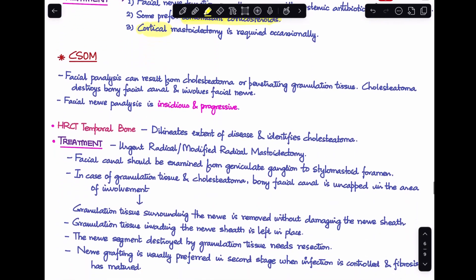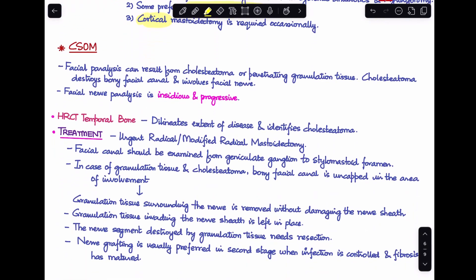In chronic otitis media, facial paralysis results not from a dehiscent canal but from cholesteatoma or penetrating granulation tissue that destroys the bony facial canal and progressively involves the facial nerve. The onset is insidious and slowly progressive. HRCT of the temporal bone helps delineate the extent of disease and identify cholesteatoma.